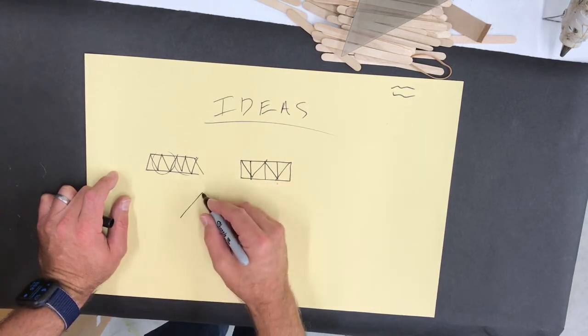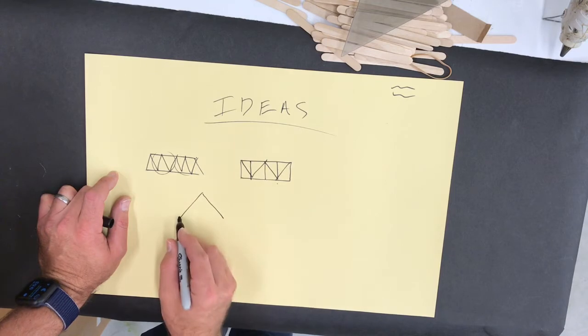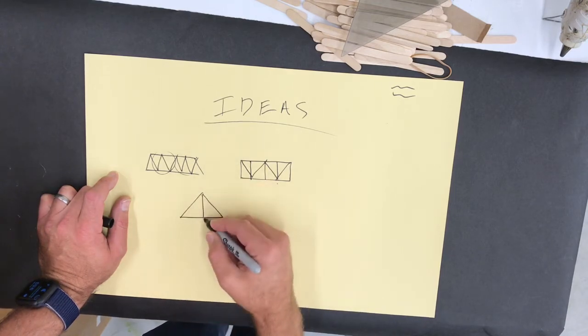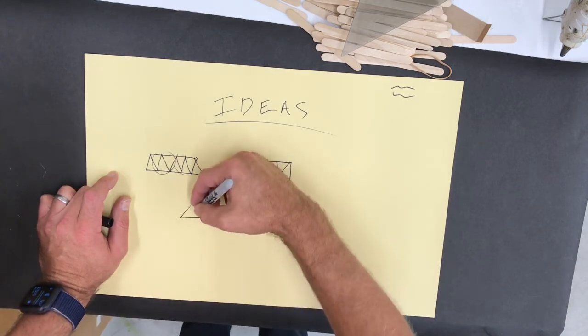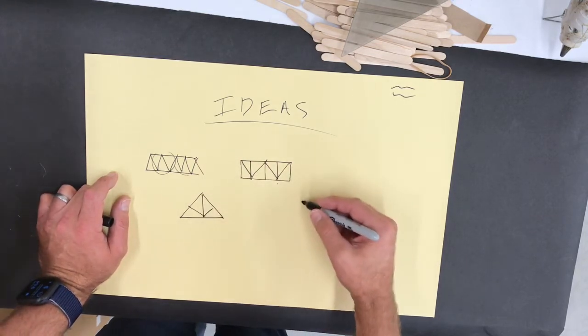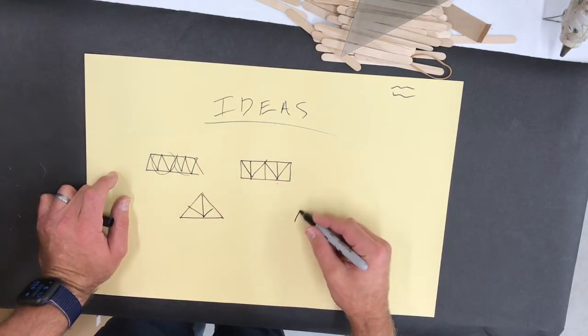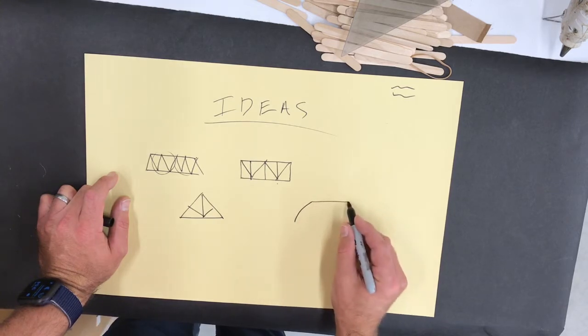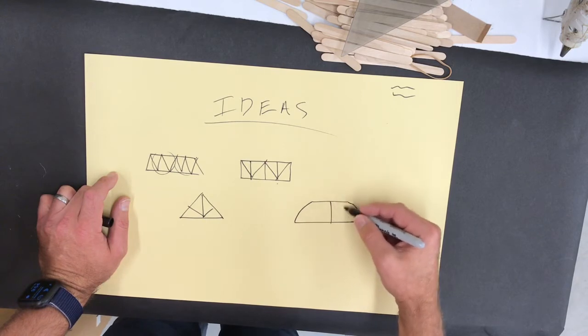Maybe you have an idea to do something like the A truss, although I would warn you that these are a little tough to do with popsicle sticks because of the length. But basically this is where you're just coming up with rough ideas on which one or which ideas that you might build.